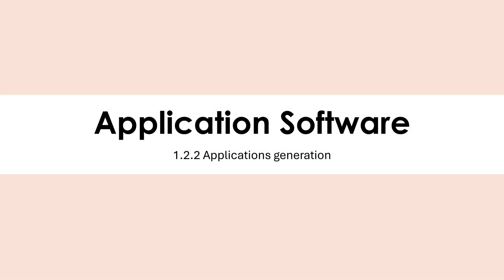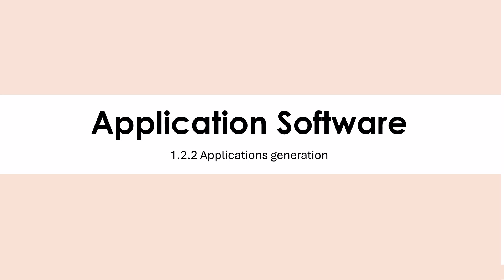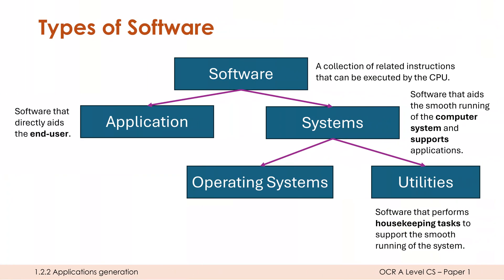This applications generation topic has quite a lot of technical information to cover. However, this particular video isn't really that technical. We're looking at different examples of application software, and it feels a little bit like this has slipped into A-level computer science by mistake, but we've got to know just a few examples of applications and what they're used for.